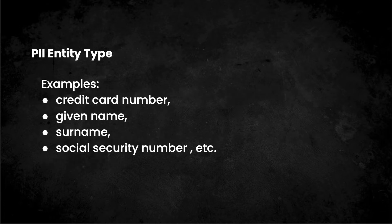There are a few examples of different PII Entity Types in this slide. Let's take a credit card number. We know that its length is 16 digits. We see how these 16 digits are organized into 4 groups of 4 digits on our bank cards.